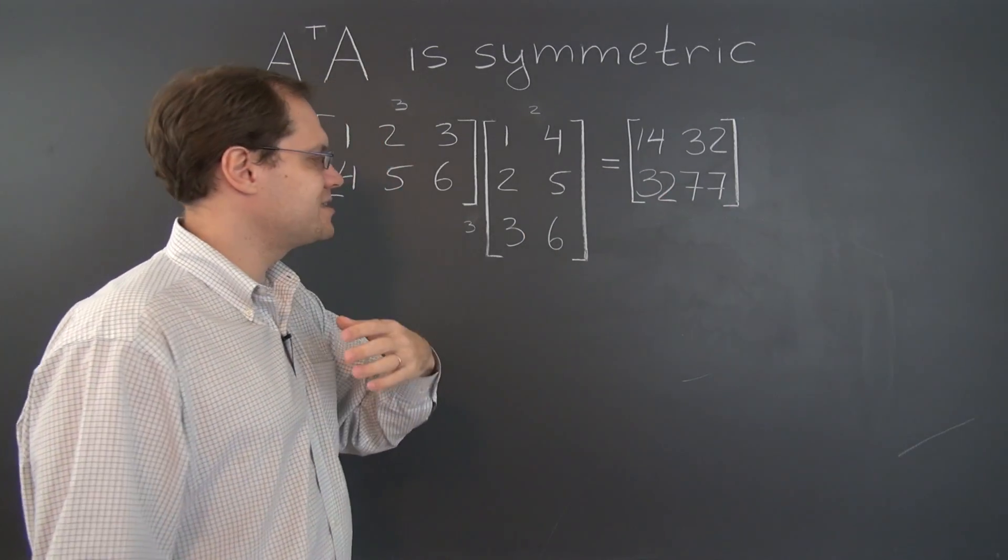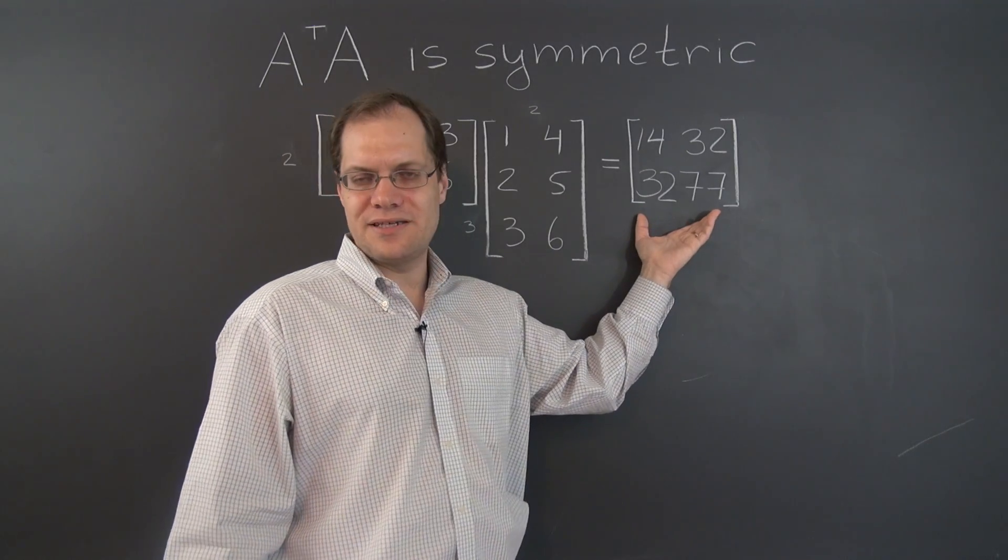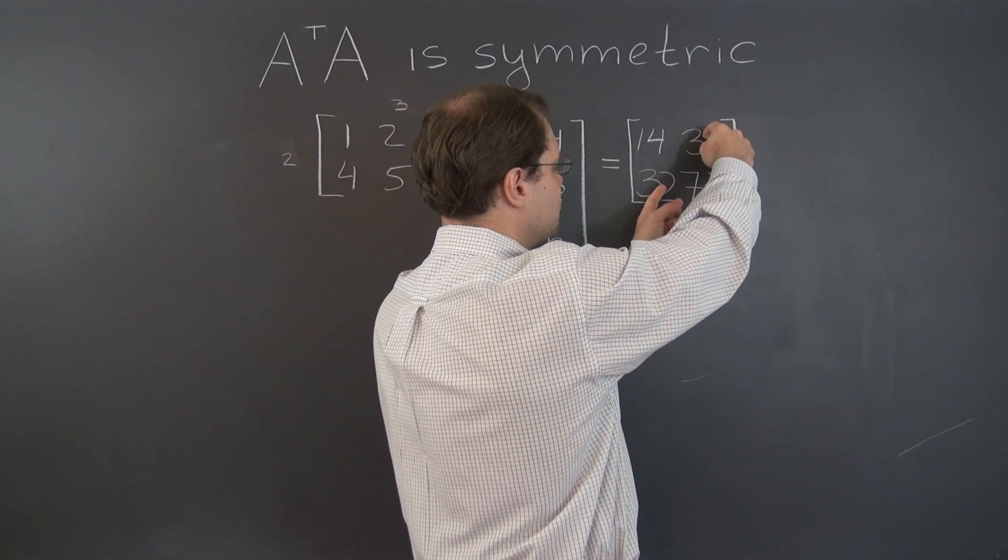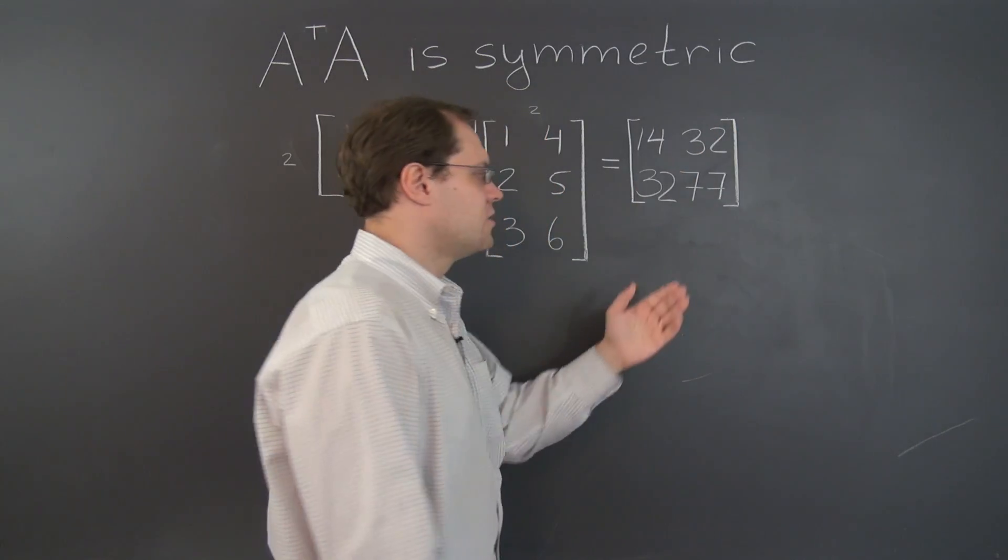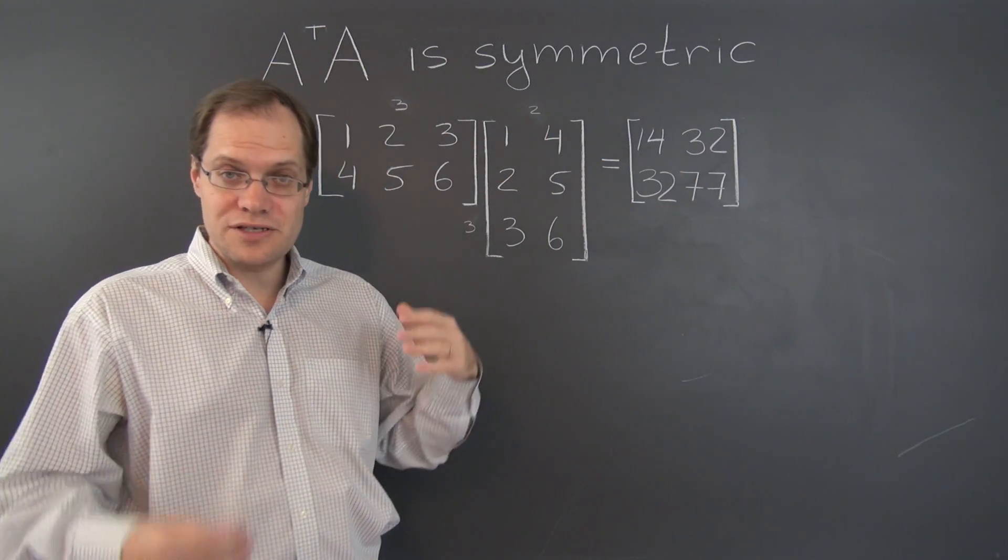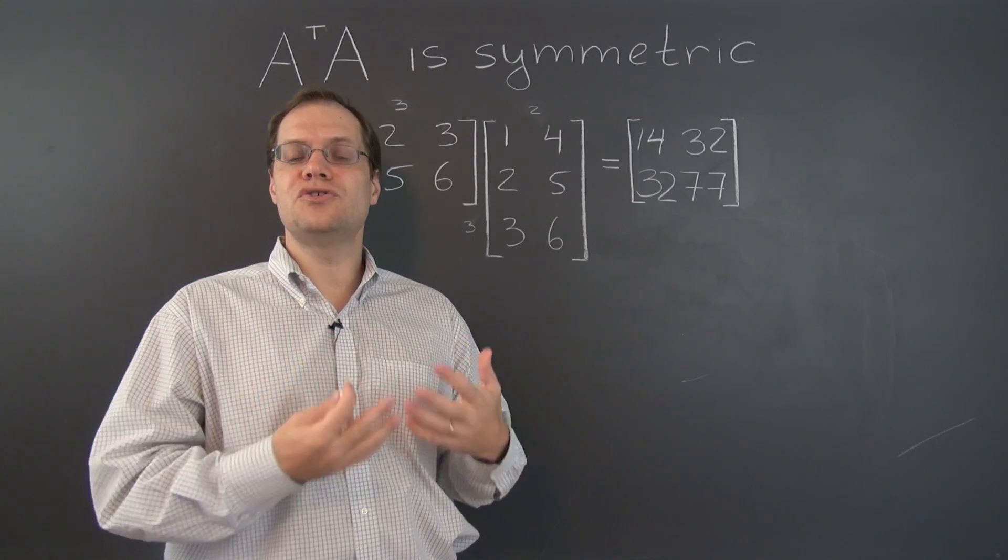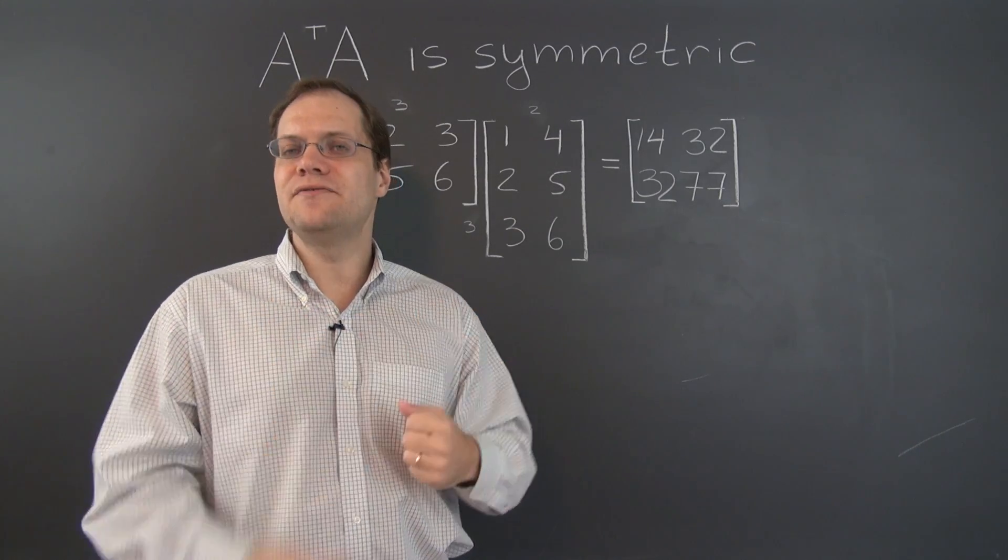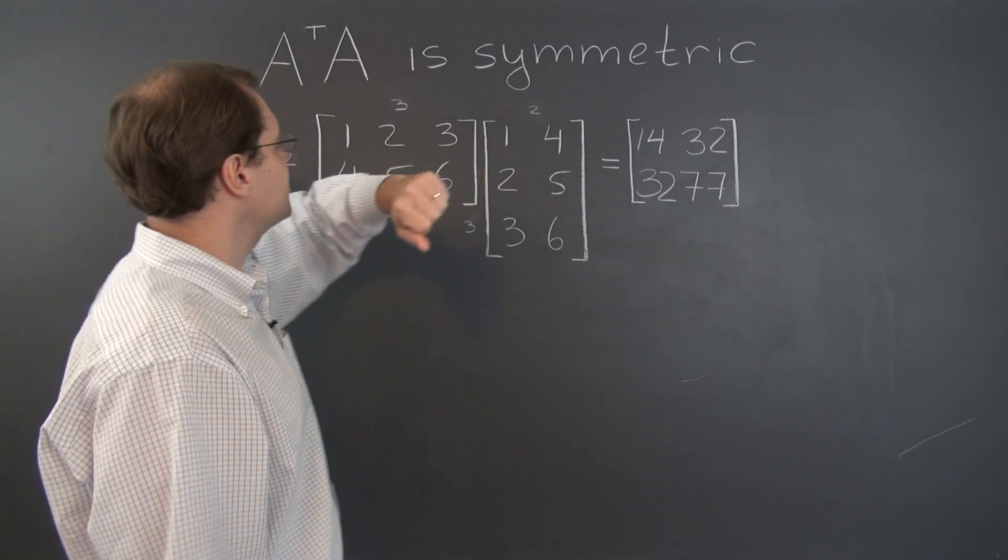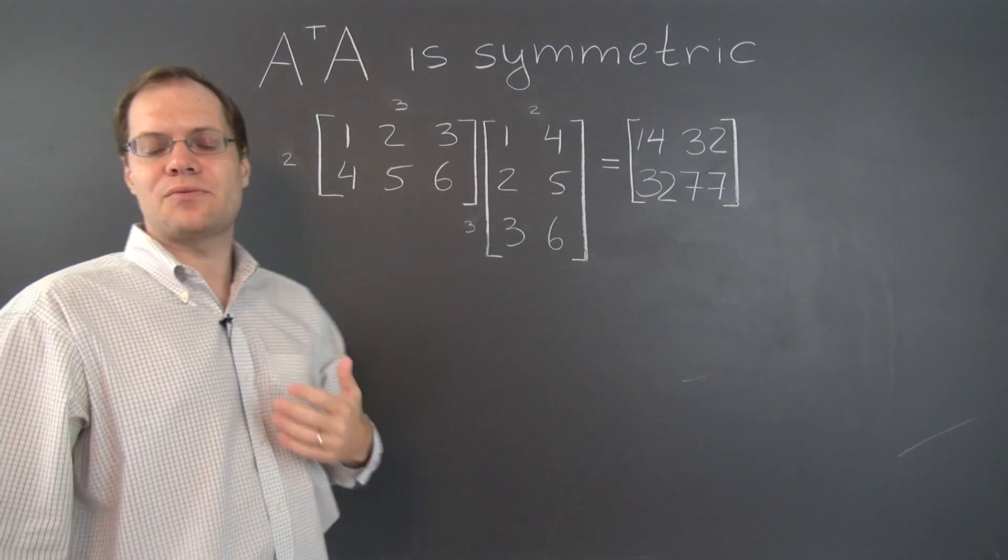So I think this approach makes it very clear that the resulting matrix is square and that the corresponding entries across the diagonal match. So it is symmetric. So this is a very insightful approach that really shows you what happens with individual entries and proves the symmetric property of this matrix that way.